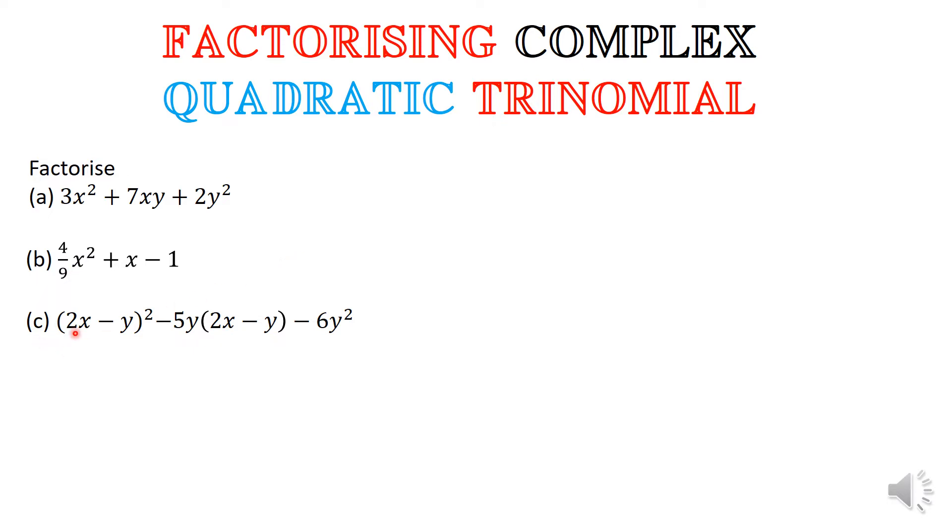And the c part is you have the quantity 2x minus y squared minus 5y times that same quantity of 2x minus y minus 6y squared. So the reason why I brought in a is that there are very good similarities between how one will approach a as well as c.